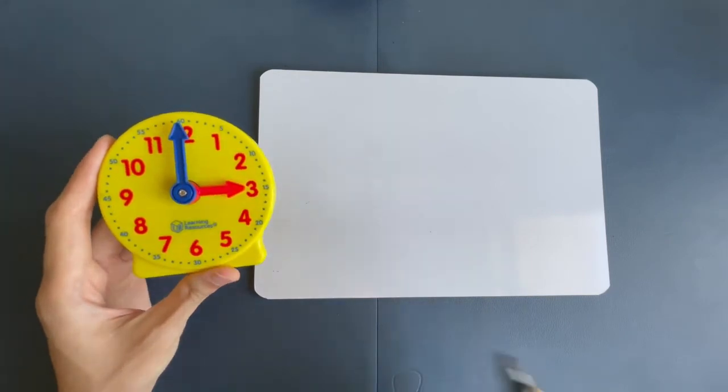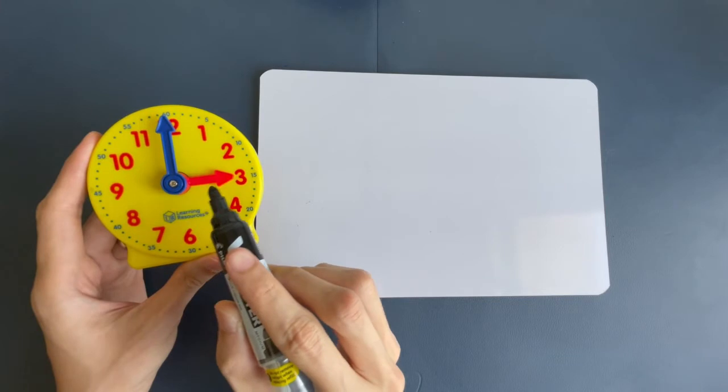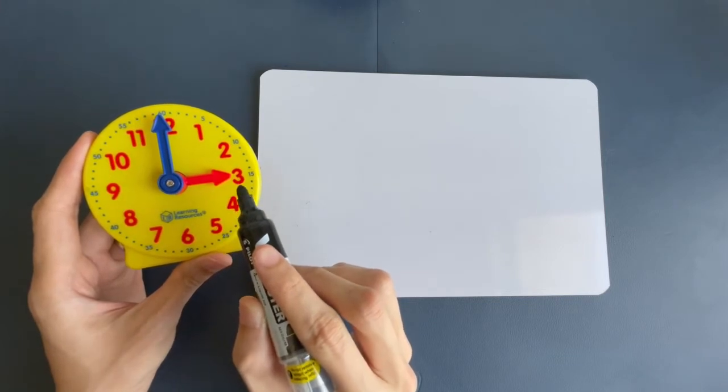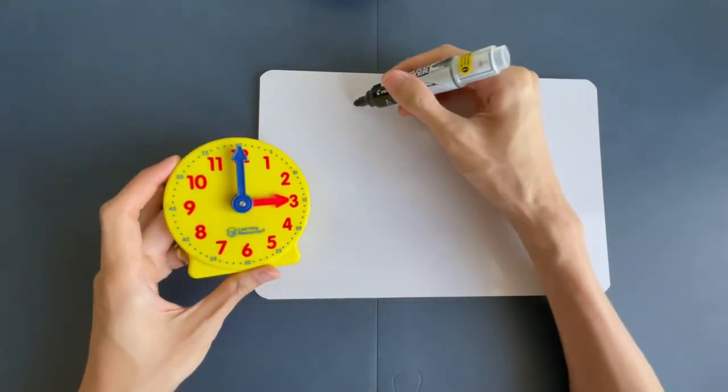Why is it 3 o'clock? Because the hour hand, the shorter hand, is pointing at 3. So, we will write it down like this.